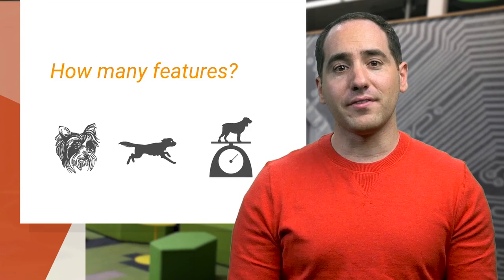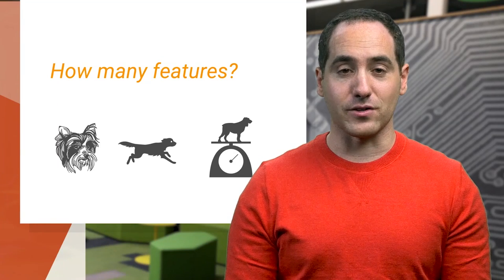You might ask about their hair length, or how fast they can run, or how much they weigh. Exactly how many features you should use is more of an art than a science, but as a rule of thumb, think about how many you'd need to solve the problem.